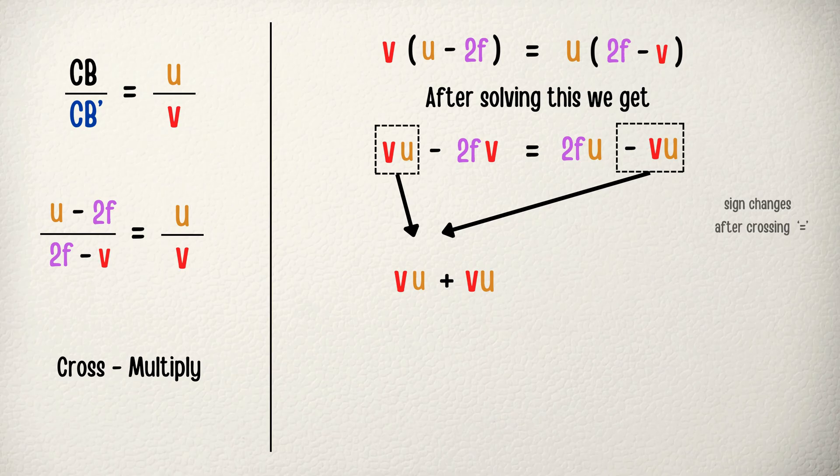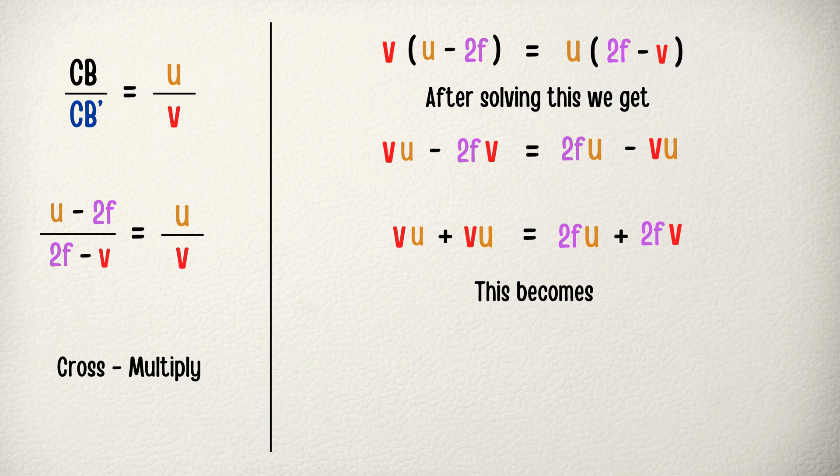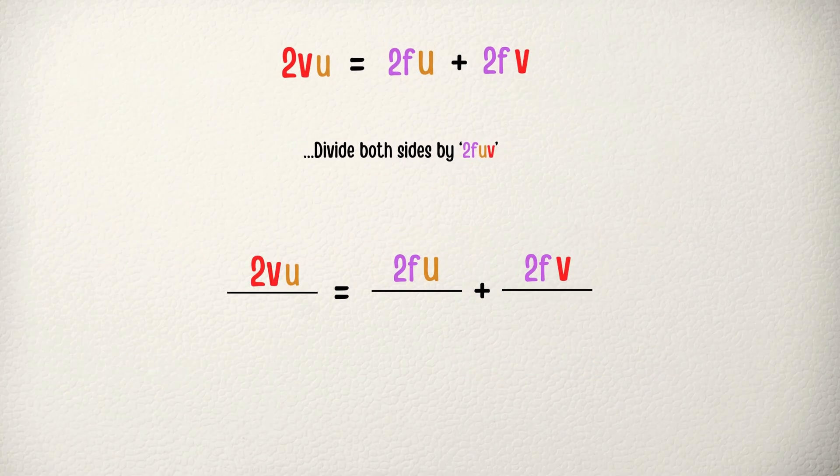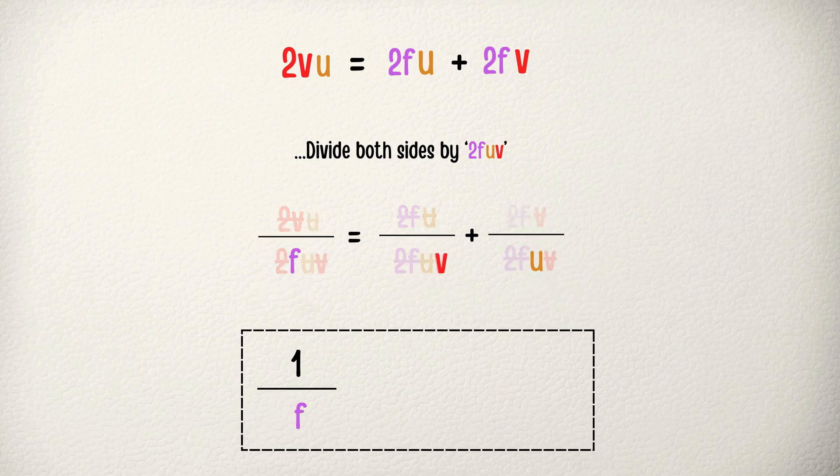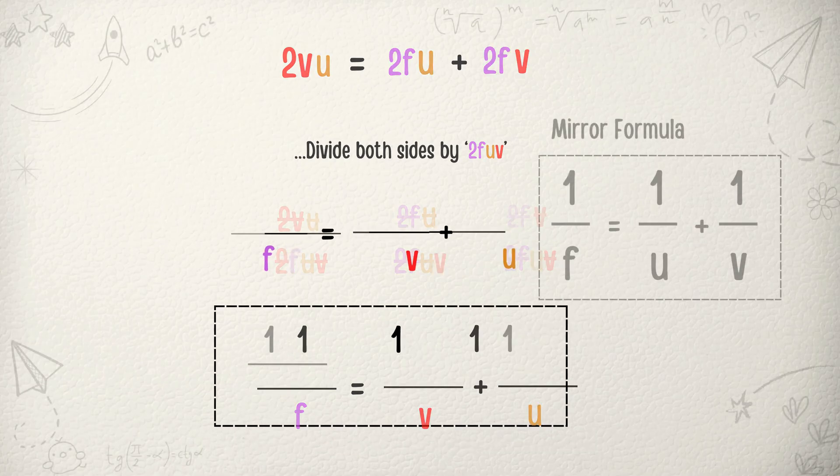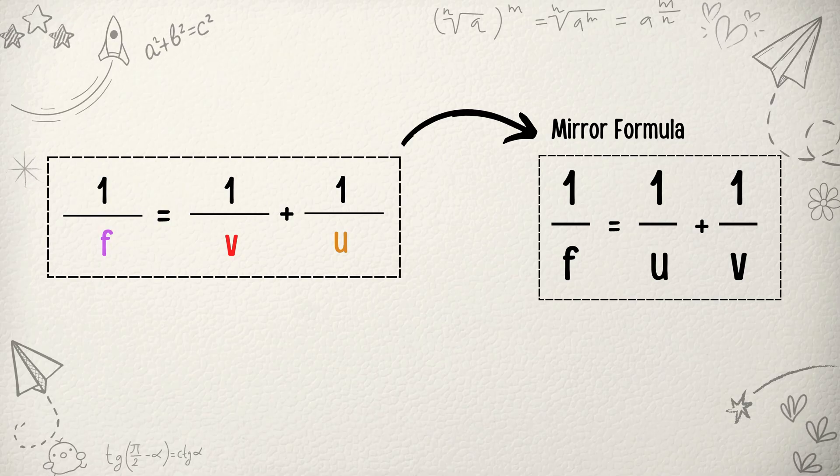Let's put uv terms on one side and f terms on another. It becomes 2uv equals 2fu plus 2fv. Now let's divide both sides by 2fuv. There are many similar terms, so let's cancel them out and it becomes 1 divided by f equals 1 divided by v plus 1 divided by u. And here it is. This is our mirror formula and hence it is proved.